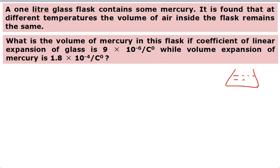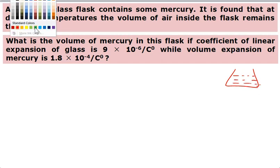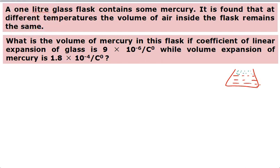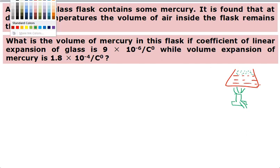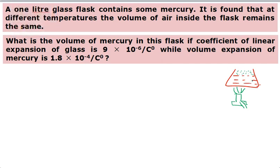The question is: we have a flask in which some mercury is filled. The space above the mercury contains air. According to the question, when we heat it, the volume of air does not change. So basically, both the flask and the mercury are expanding, and they expand in such a way that the change in volume of mercury is equal to the total change in volume of the flask.